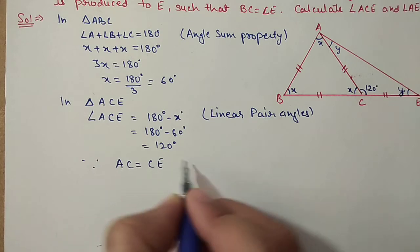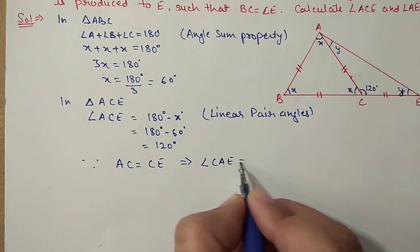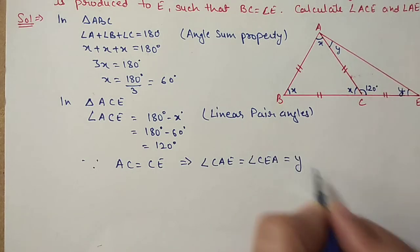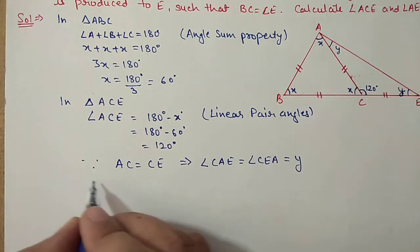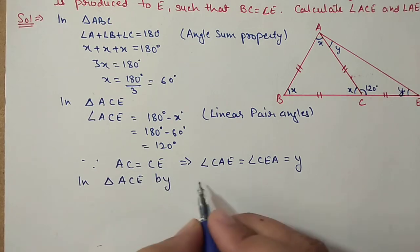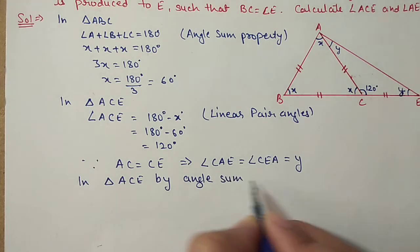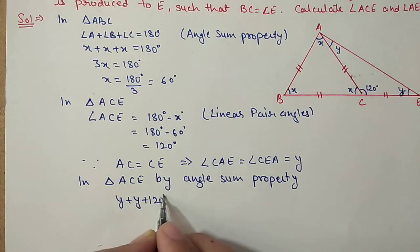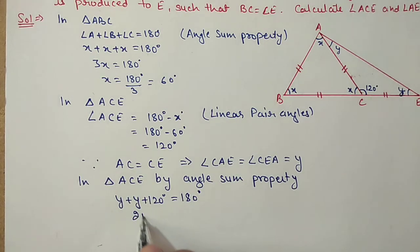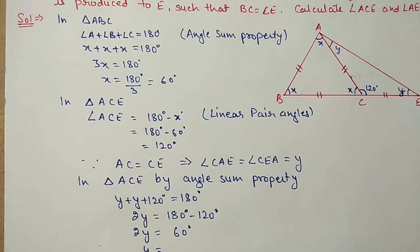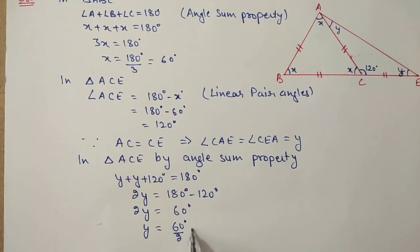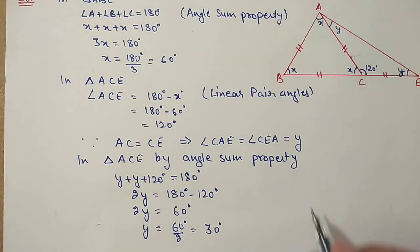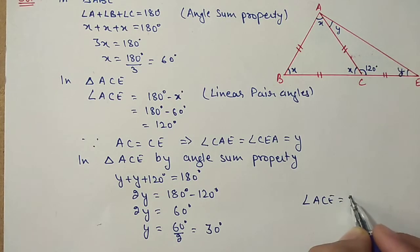Because AC is equal to CE, angle CAE is equal to angle CEA, and both are taken as Y. Again using angle sum property in triangle ACE: Y plus Y plus 120 equals 180 degrees. So 2Y equals 60 degrees, and Y equals 30 degrees. Therefore angle ACE is equal to 120 degrees and angle AEC is equal to 30 degrees.